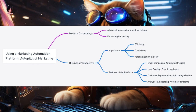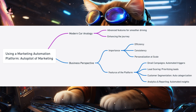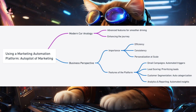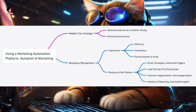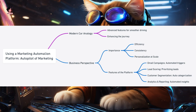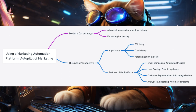Using a marketing automation platform — the autopilot of your marketing journey. Think of driving a modern car equipped with features like cruise control, automatic braking, and lane-keeping assist. These features don't replace the driver, but make the journey smoother and more efficient. Similarly, a marketing automation platform doesn't replace marketers, but enhances their efforts, making campaigns more streamlined and effective. Why use one? Efficiency — automation platforms handle repetitive tasks, saving time and effort. Consistency — automation ensures certain marketing actions happen consistently. Personalization at scale — automation platforms can deliver personalized marketing messages to large audiences.